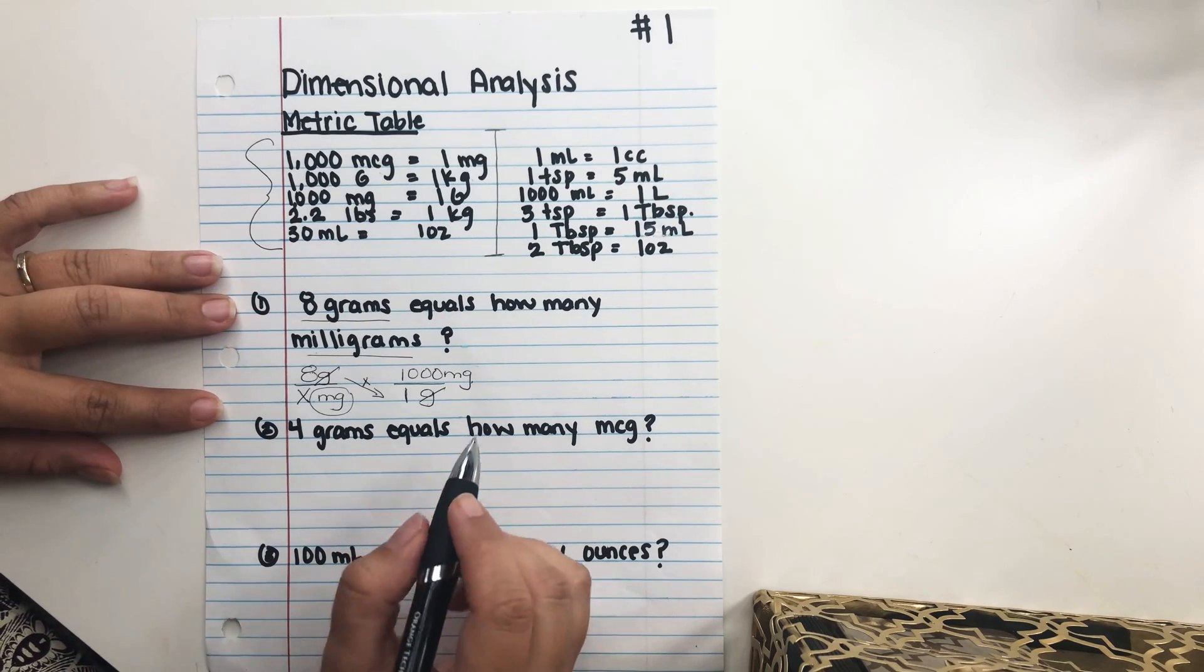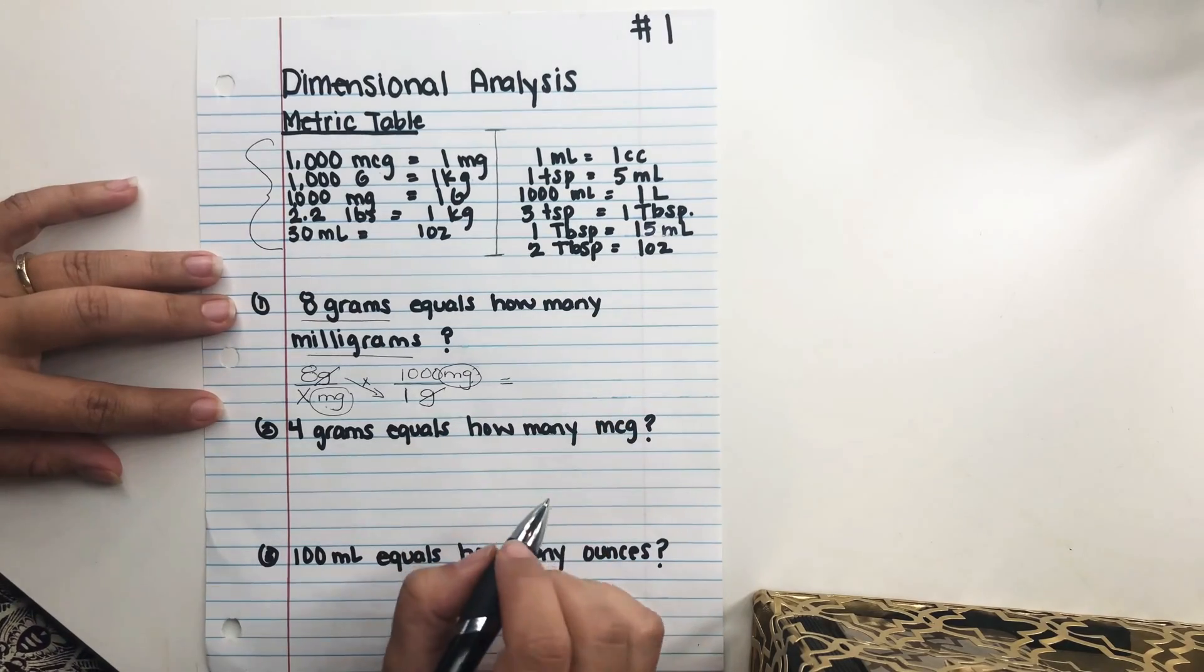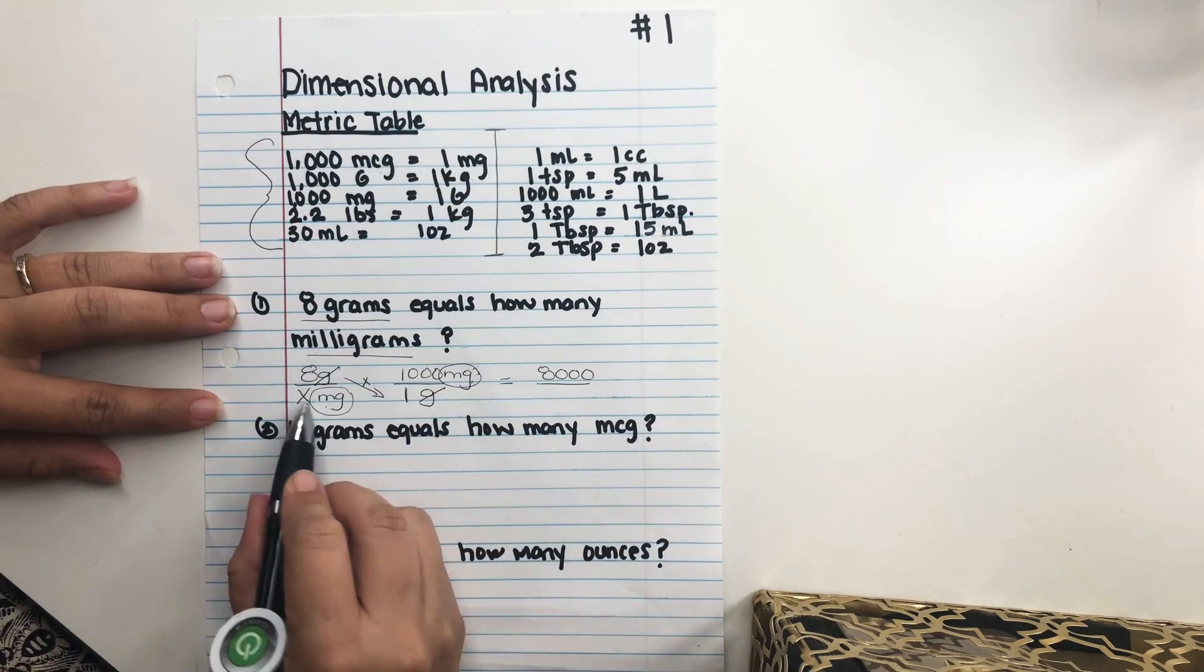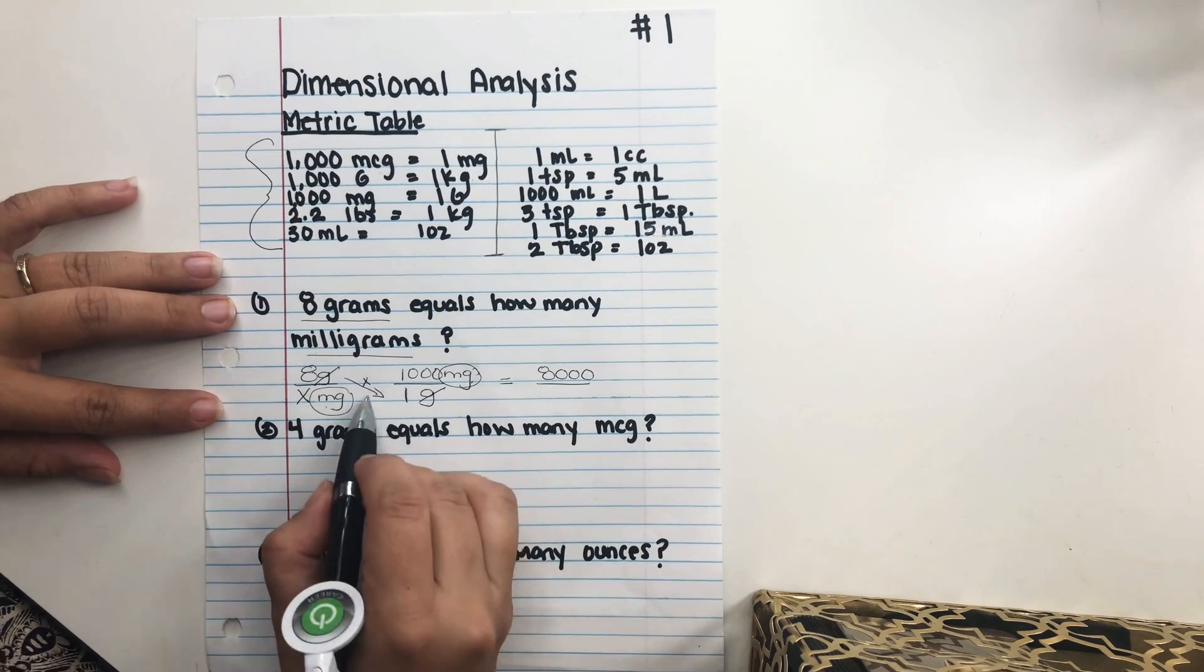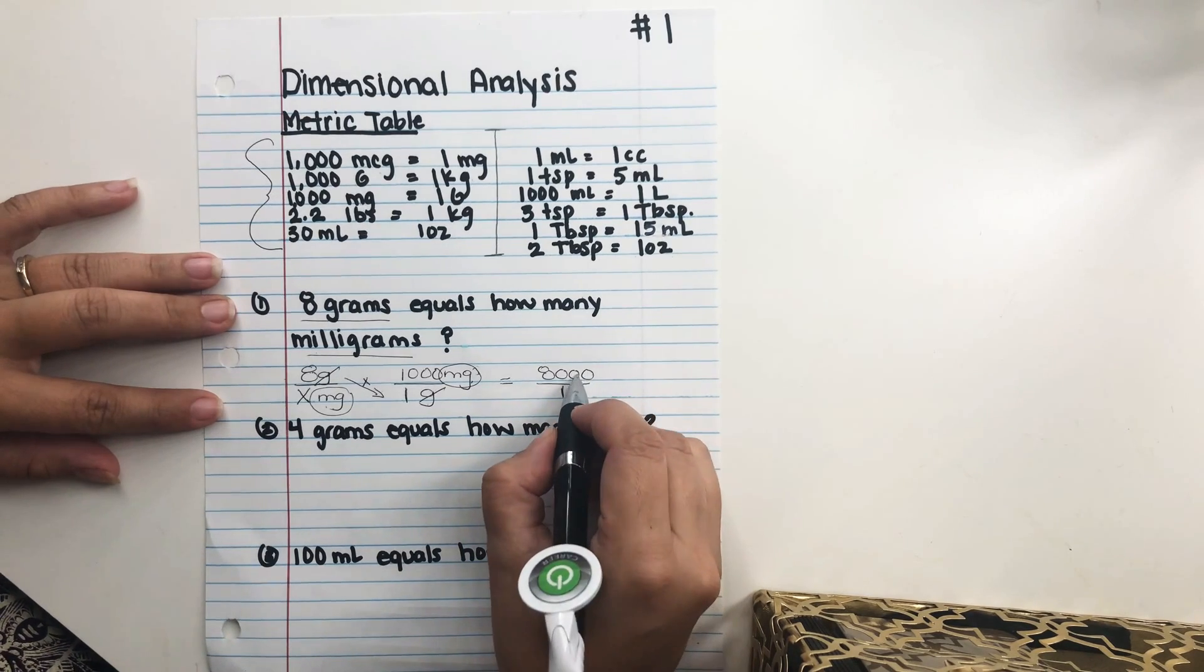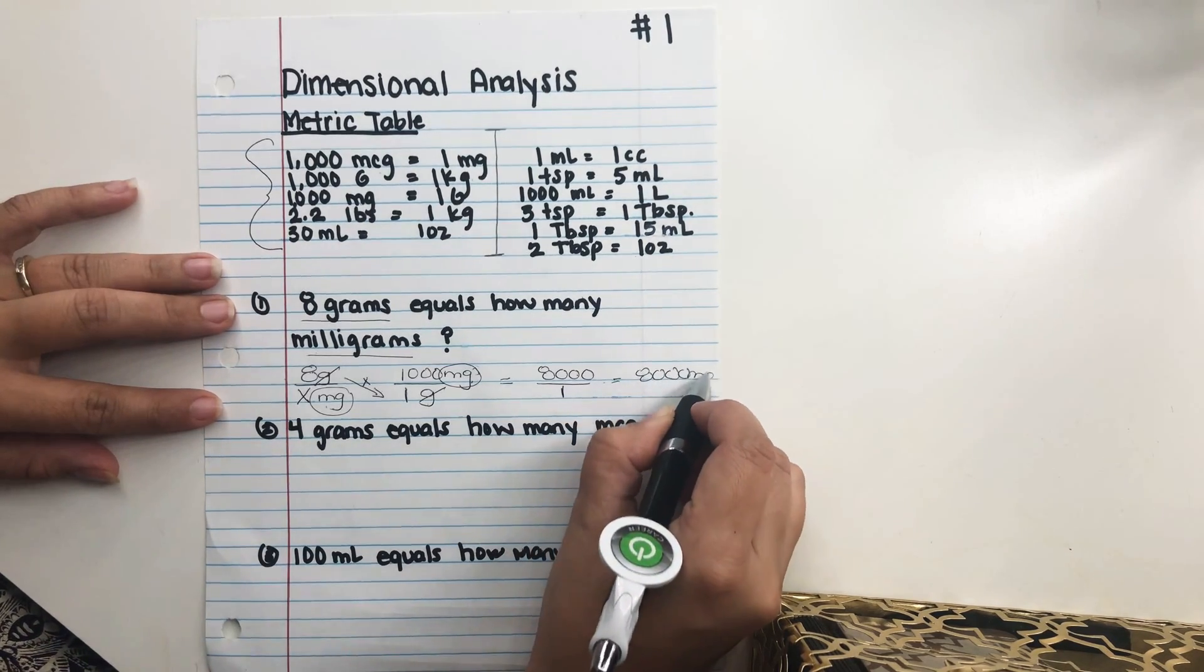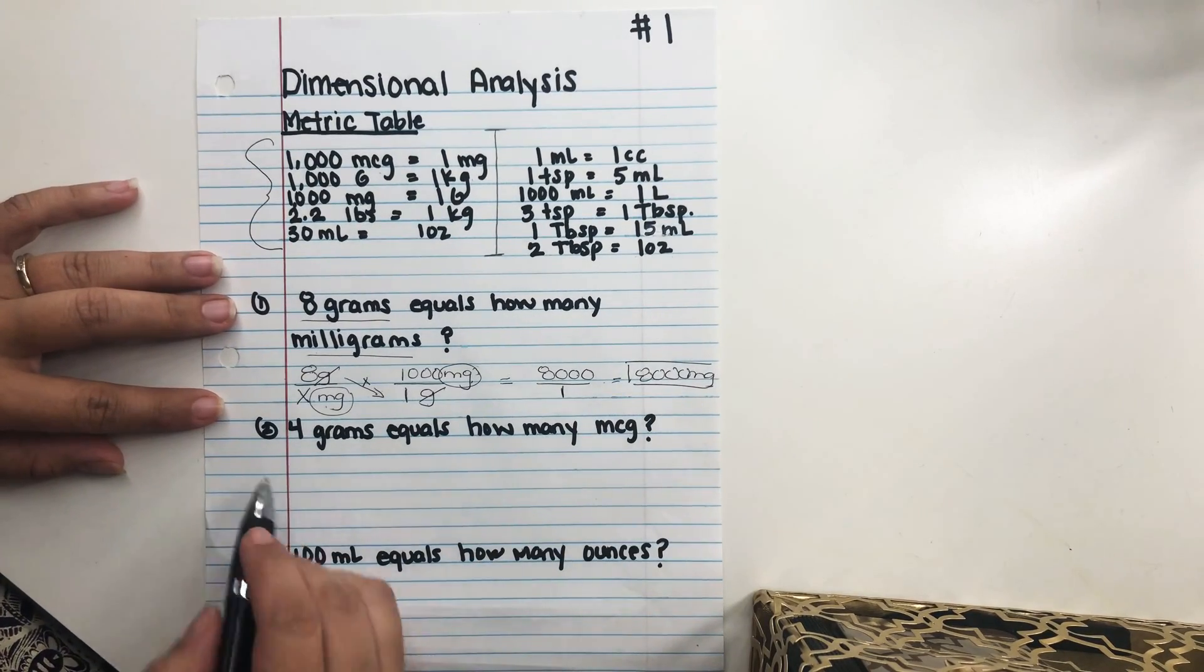Okay, so this problem is set up. We have our milligrams. We can go ahead and multiply across. So 8 times 1,000 is 8,000. And then we have our X, which you can just use as a place value of 1 times 1 is 1. So we can divide 8,000 into 1 equals 8,000 milligrams. So that is our answer. Super easy.